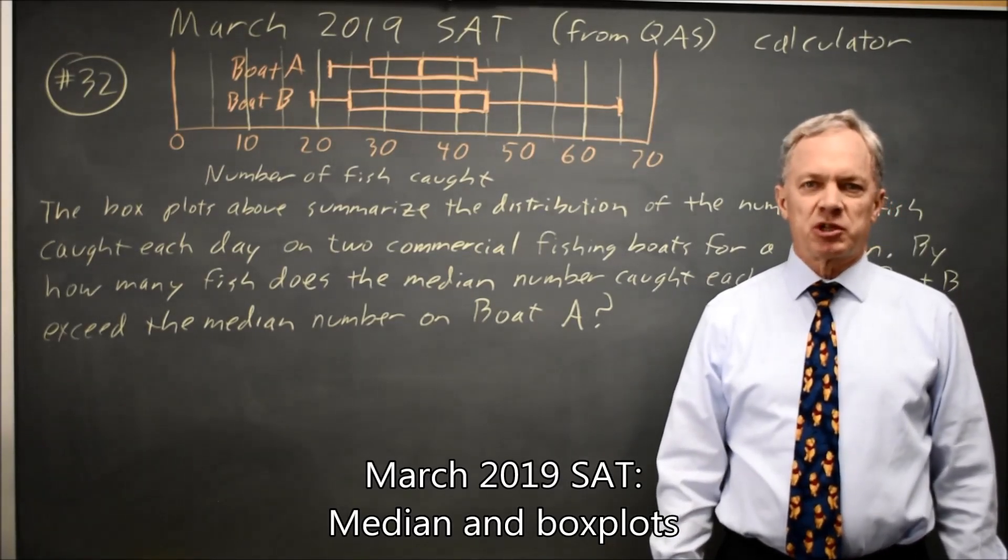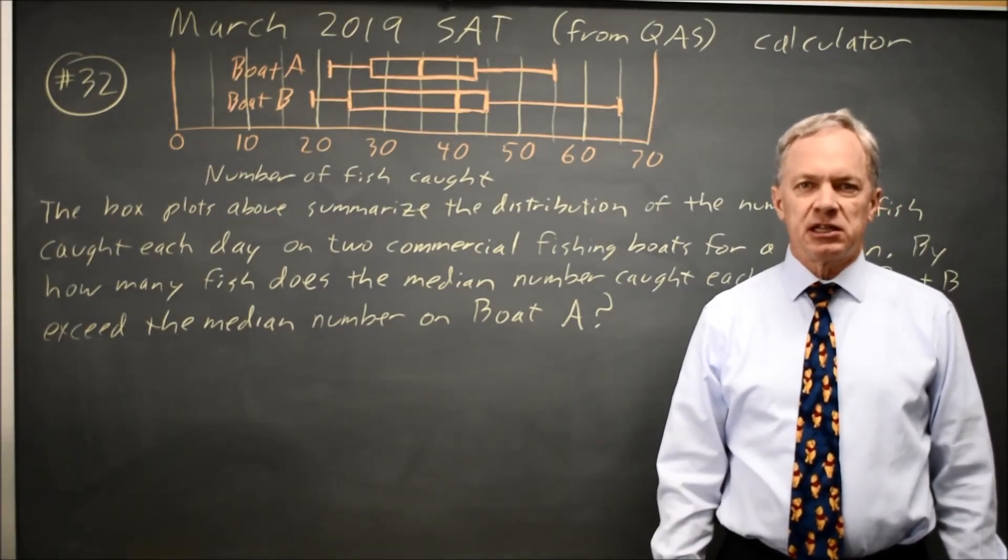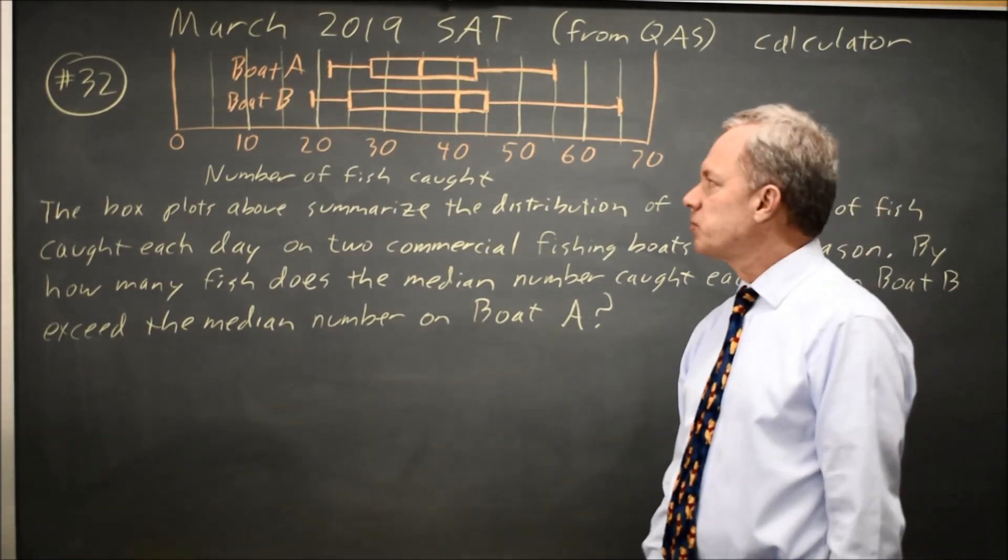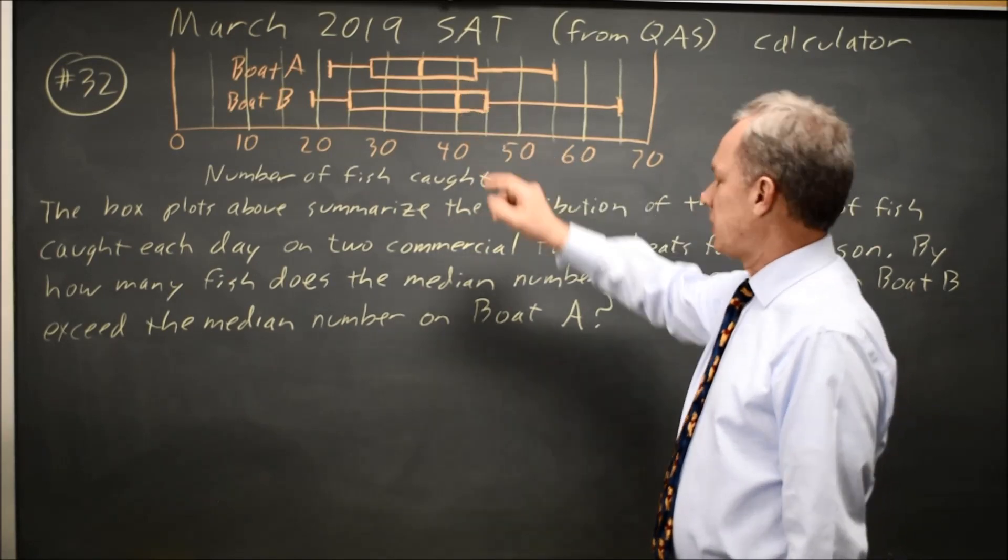This is Calculated Question Number 32 from the March 2019 SAT. The College Board is asking us about box plots, in particular the difference in the medians based on these box plots for boats A and B.